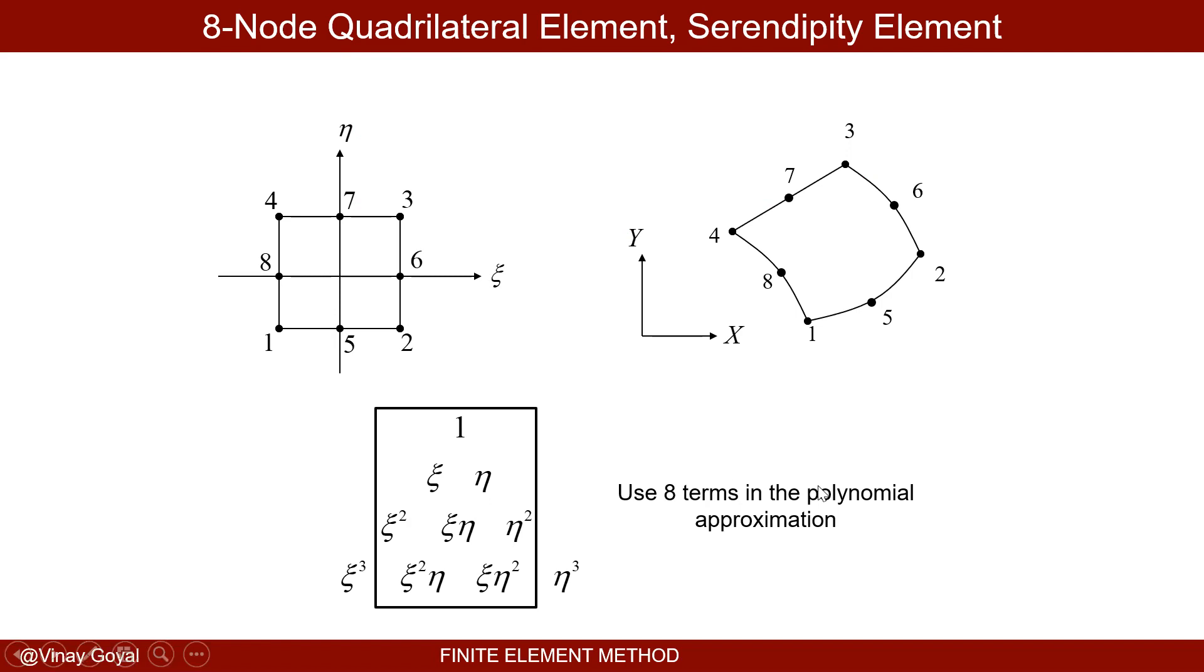We'll use an eight term in the polynomial approximation. So why I'm using eight, because I have eight nodes. So one, two, three, four, five, six, seven, eight.